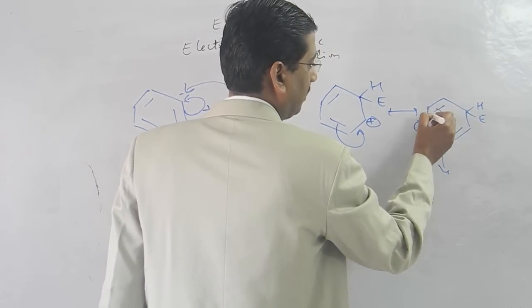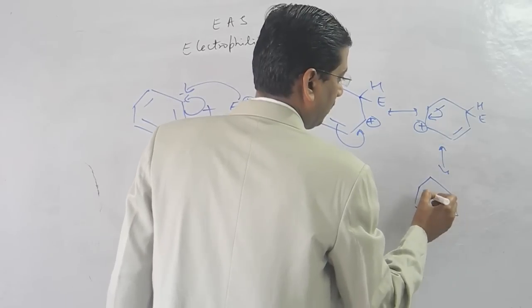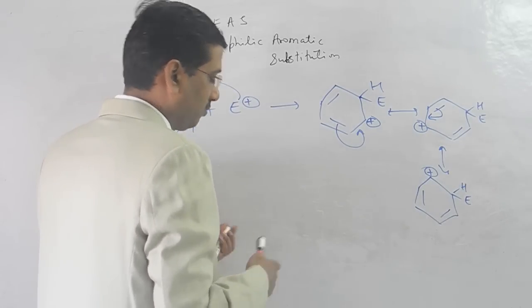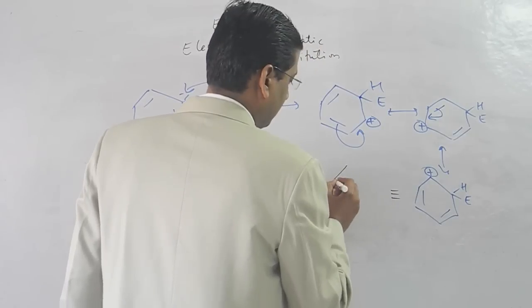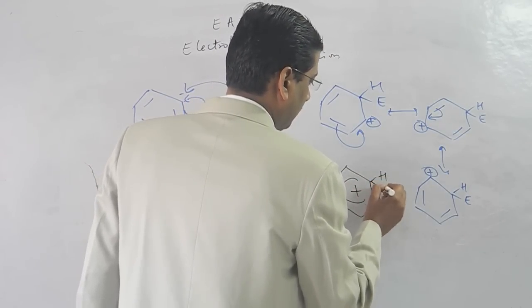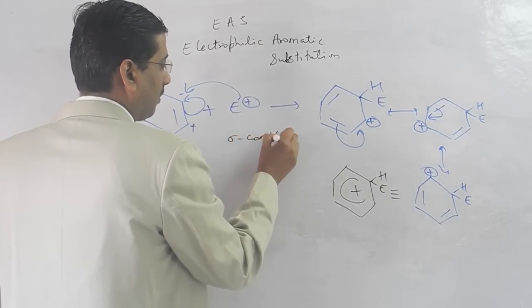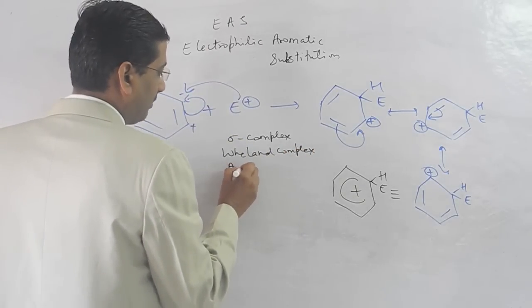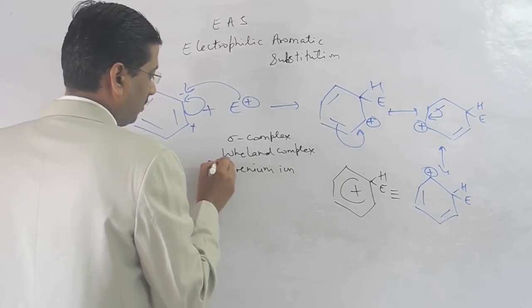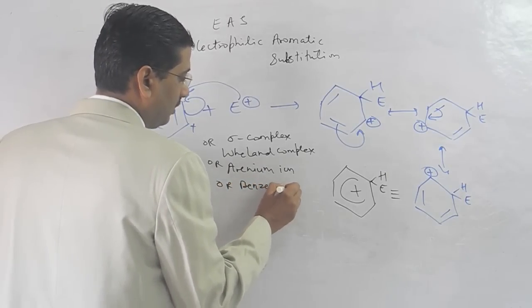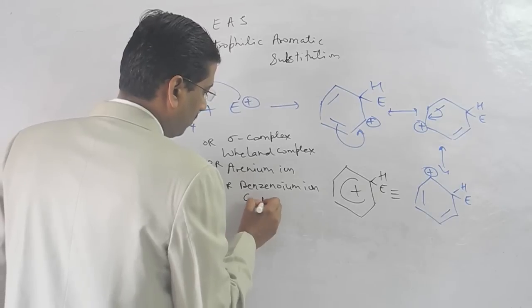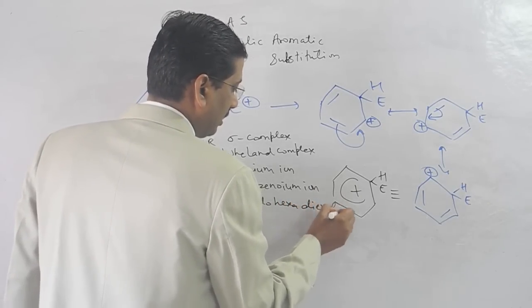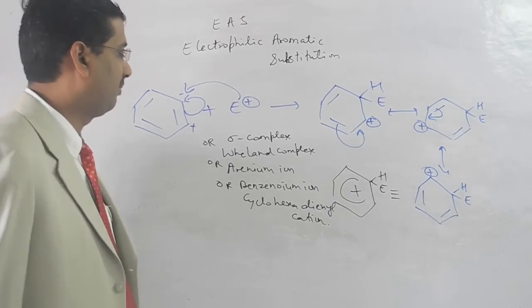Then you can see your resonance. This is Sigma Complex, also called Greenland Complex, Arenium ion, Wheland intermediate, cyclohexadienyl cation. These are all the names. Sigma Complex is the most famous name.